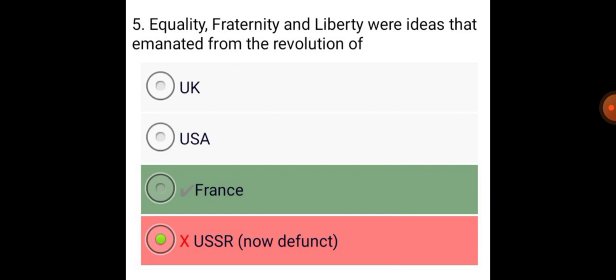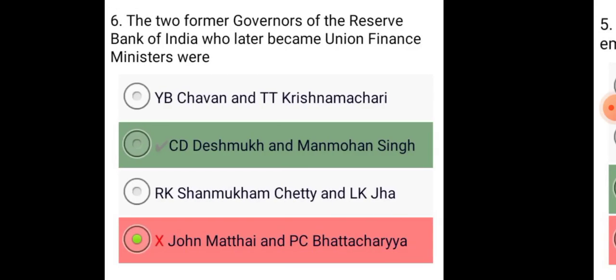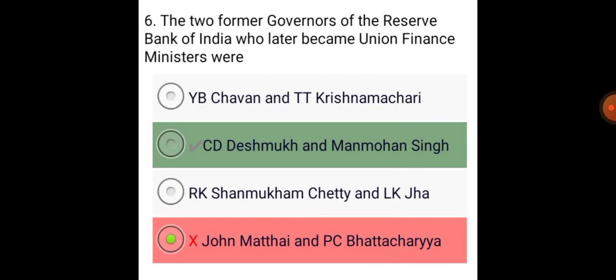Equality, fraternity, and liberty were ideas that emanated from the revolution of France. The two former governors of the RBI who later became Union Finance Ministers were C.D. Deshmukh and Manmohan Singh.